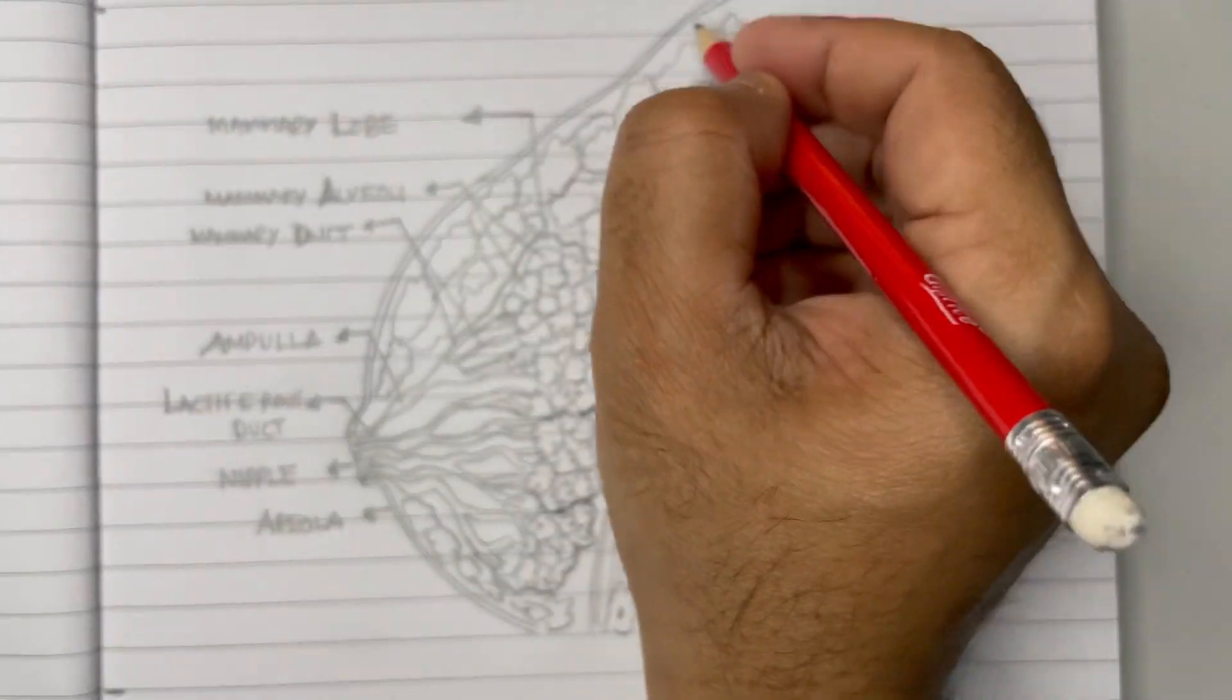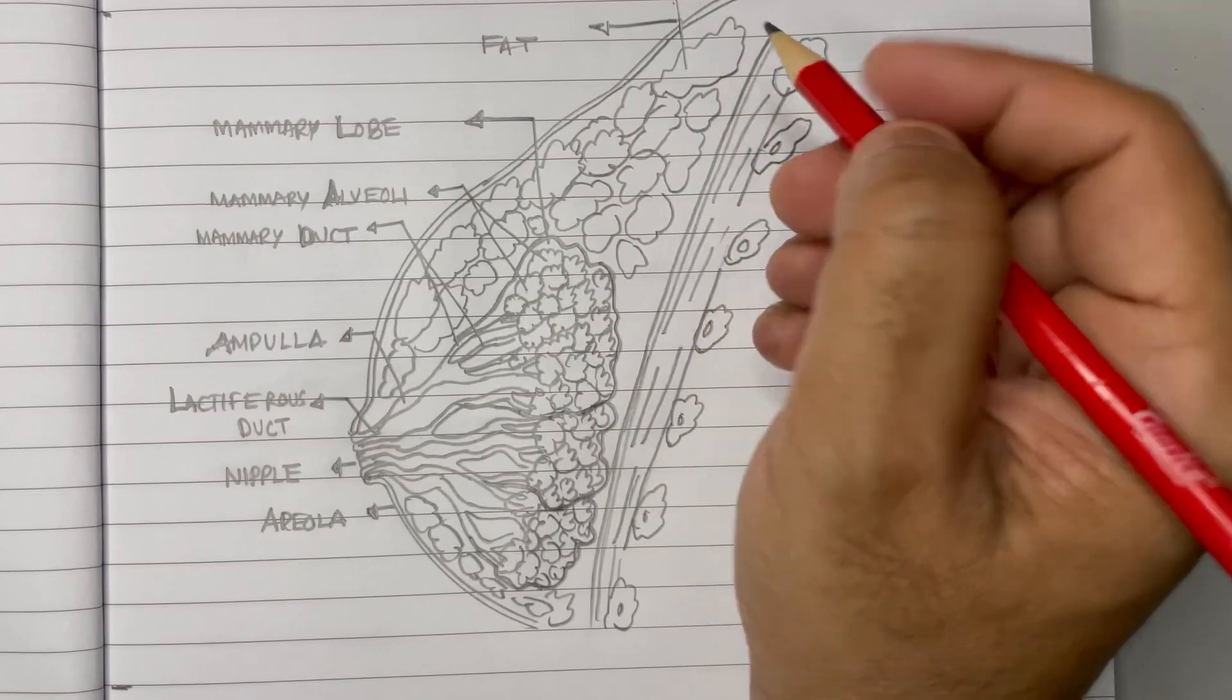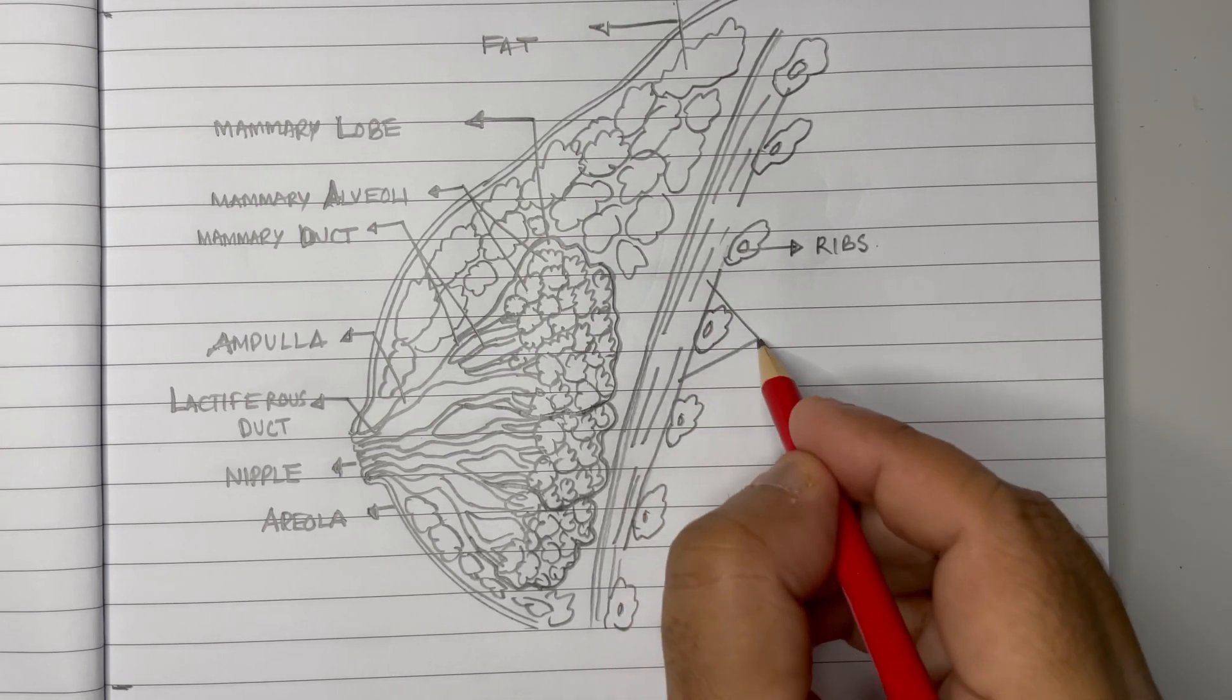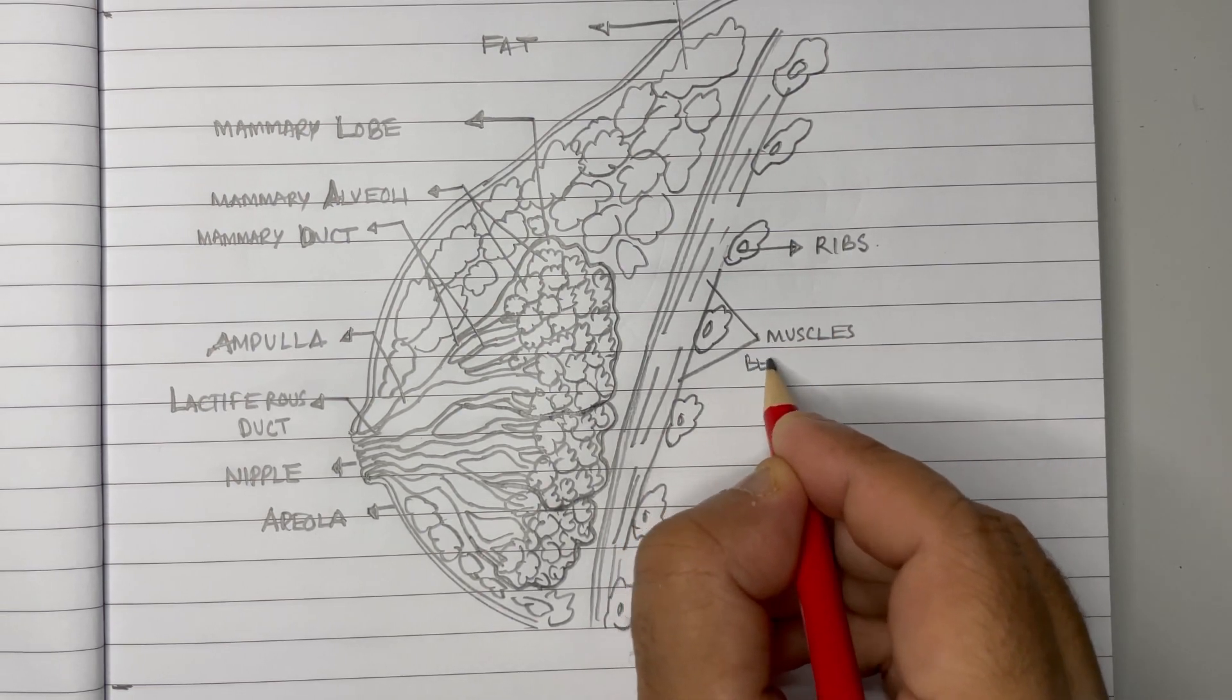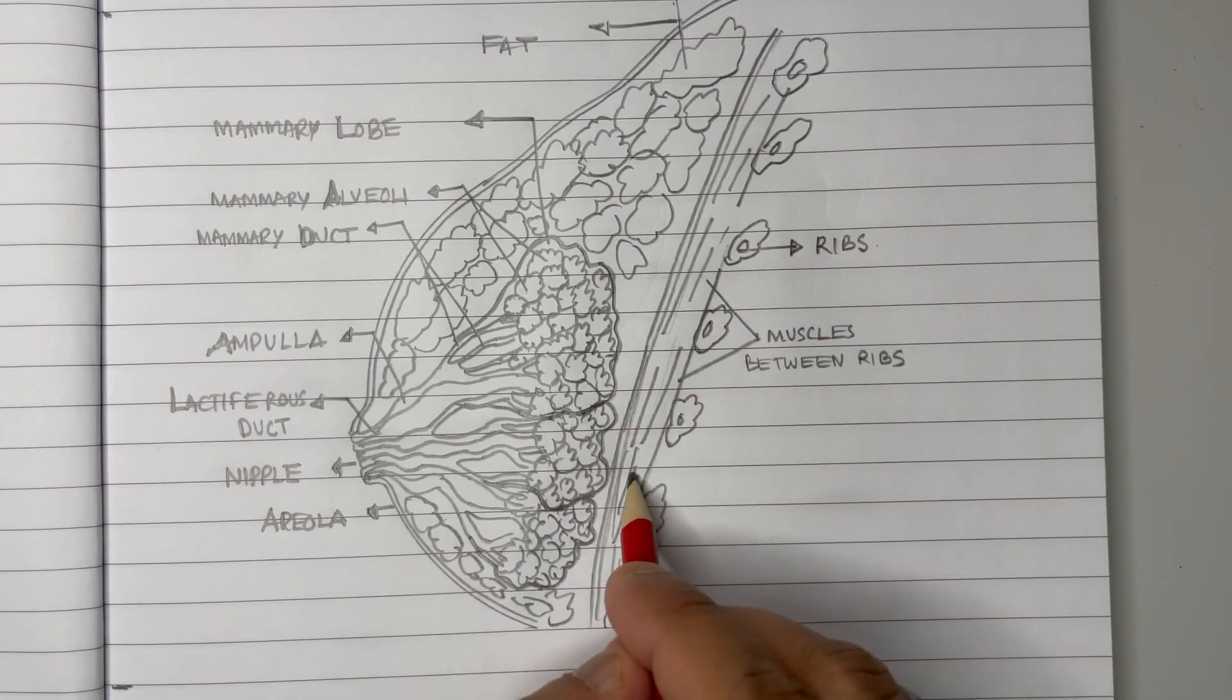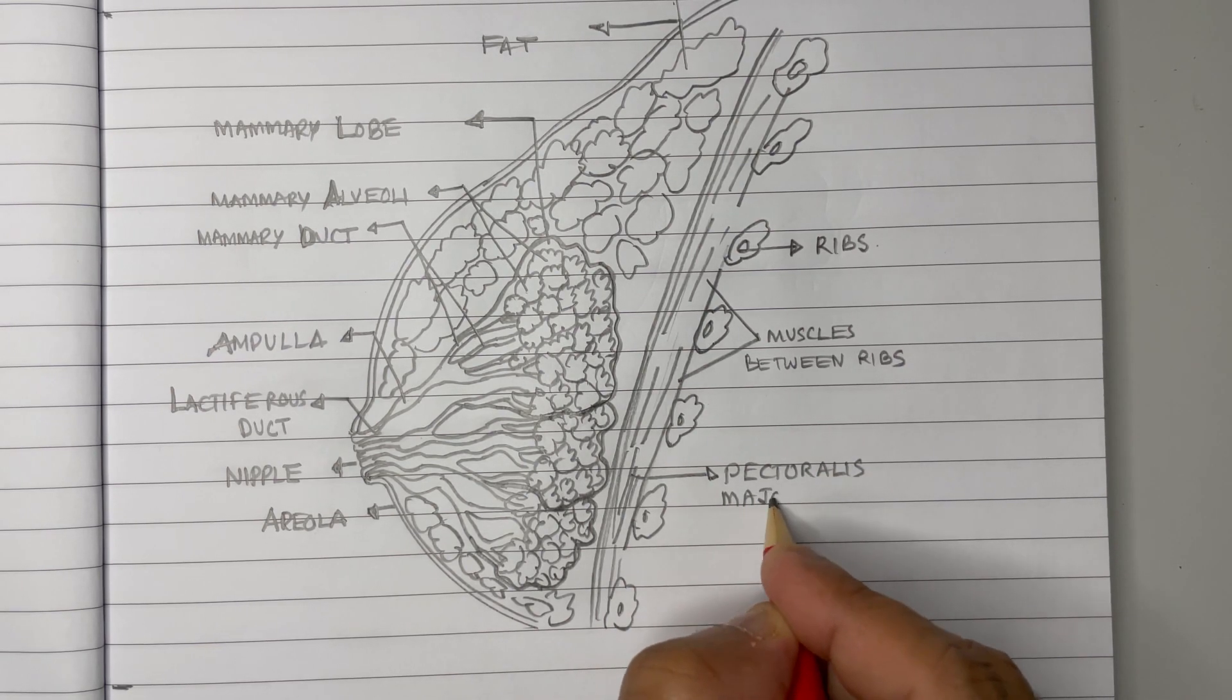This structure that we have drawn here is called fat, so let us mark that. Fat. Here we can mark this as ribs. There are some muscles between the ribs, so we can mark it as muscles between ribs. Another important muscle is here in between, that's called pectoralis major. Let us write pectoralis major muscle.